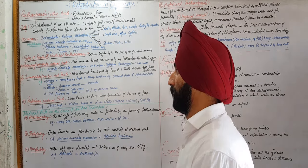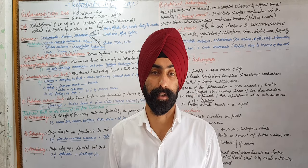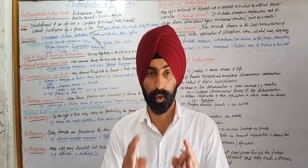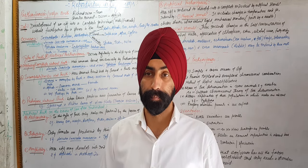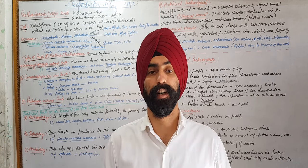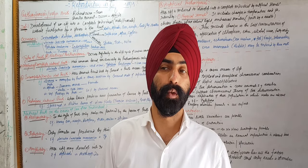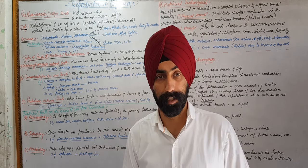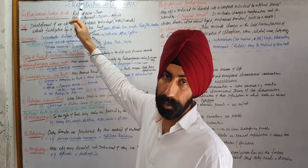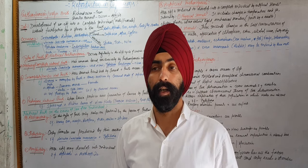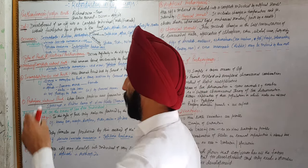Good morning students. We were discussing parthenogenesis — so far we discussed the mechanism or process. Today we will discuss the types of parthenogenesis. Parthenos means virgin birth: an organism able to develop without fertilization by a sperm. It is the development of an egg into a complete individual without being fertilized. This term was given by Richard Owen; Charles Bonnet discovered this process in aphids for the first time.